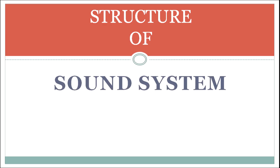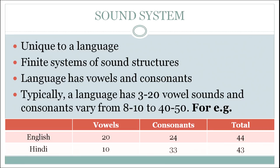Let us discuss our first topic, which is the structure of the sound system. When we talk about the structure of the sound system, we are generally talking about phonetics and phonology. A sound system is unique to a language. In every language, there are some finite systems of sound structures. It is a misconception that we can create as many sounds as we want in a particular language — that is not right. There are very limited sound structures in any given language.